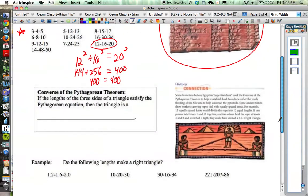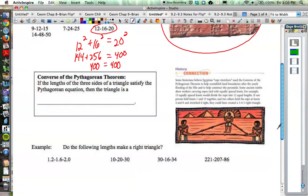So let's remember what the converse of the Pythagorean theorem would say. The converse says if the lengths of the three sides of a triangle satisfy the Pythagorean equation, then the triangle is...